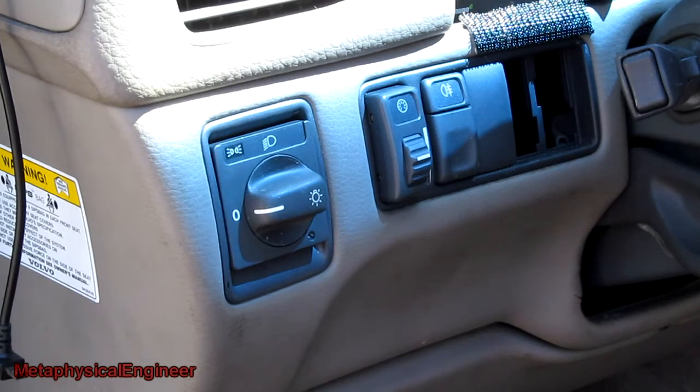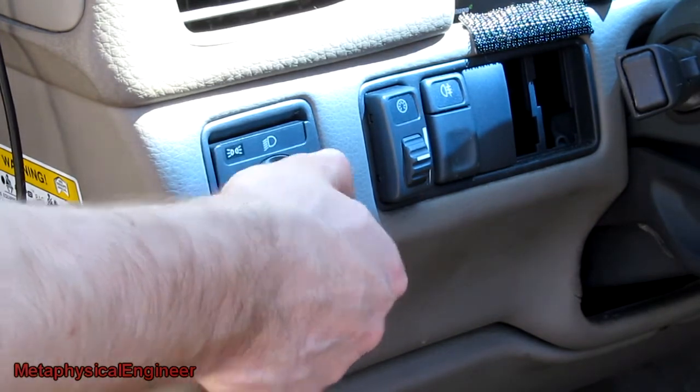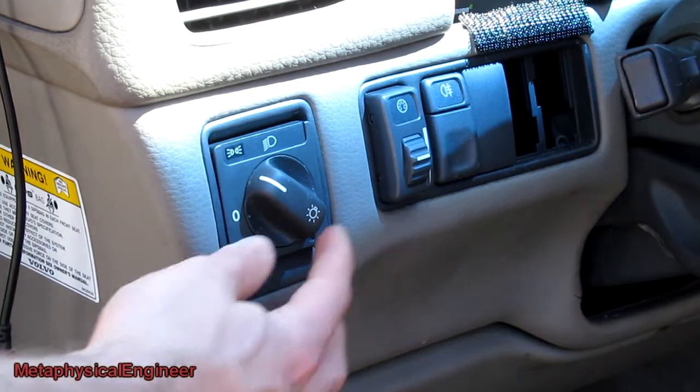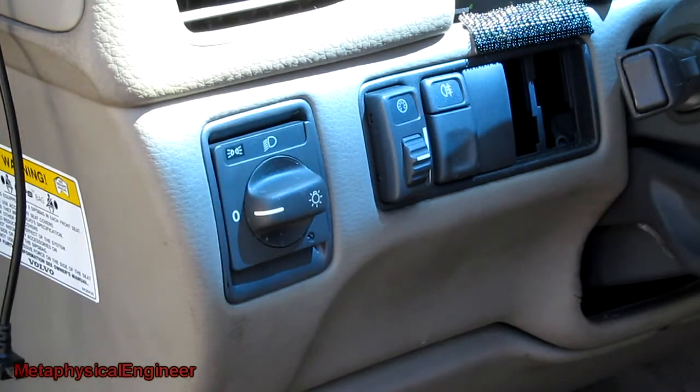The light system on this car has three settings. Off, which is self-explanatory, parking lights, which come on regardless of where the key is, and headlights on. We need to add a third function to this, tapped in to activate when it's in the off position.